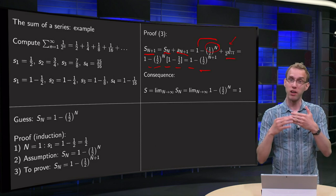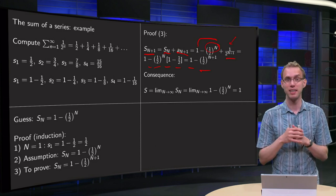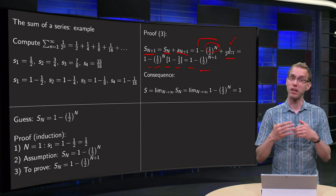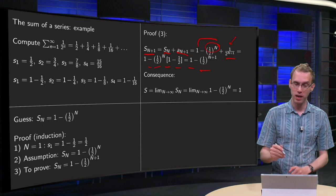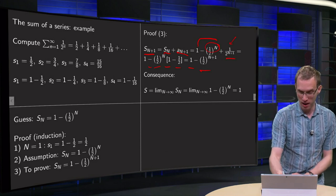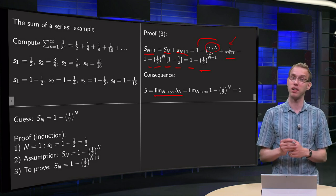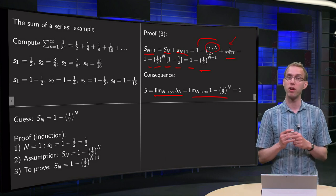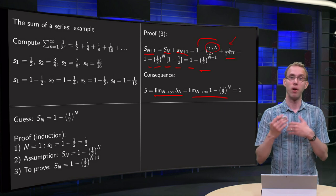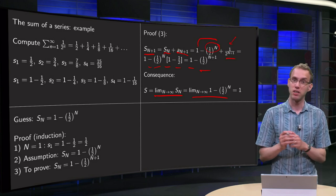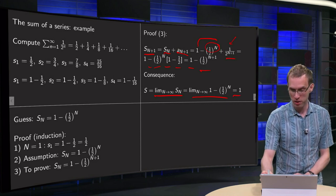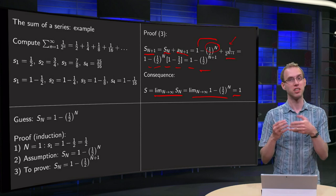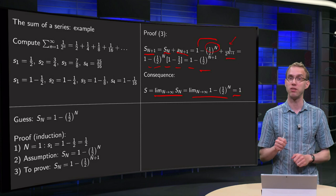So now we see that our guess is indeed correct. Now we know our Nth partial sum, so we can try to compute the sum of the series. We have to take the limit as N goes to infinity of S_N and see whether this limit exists. So, limit as N goes to infinity of 1 minus (1/2) to the power N. The second term is a standard limit that equals 0, so our sum equals 1. So 1/2 plus 1/4 plus 1/8 plus 1/16, etc., if you add those up, that equals 1.